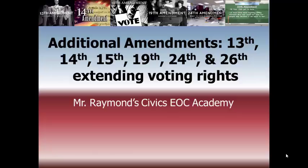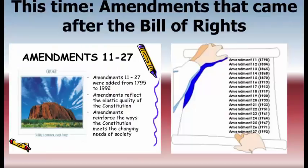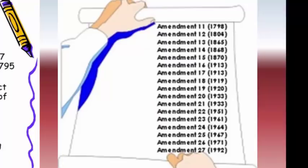Last time we learned about the Bill of Rights, which are the first 10 amendments added to the Constitution in one document just two years after its ratification. If you haven't already checked out that video, make sure you go back and see which rights are listed in the Bill of Rights. But today the amendments we are going to examine are among the 17 amendments that have been added to the Constitution over the past 200 years.